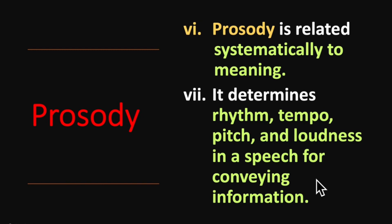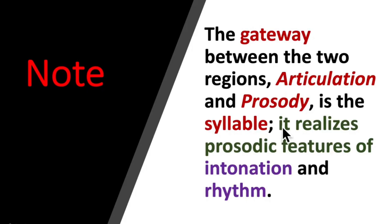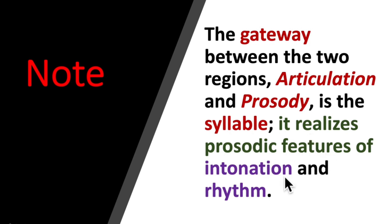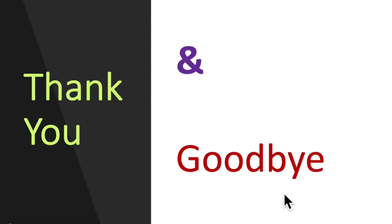The way you pronounce a syllable and the stress you place on a particular syllable does have an effect upon the meaning conveyed to the listener — we cannot ignore it. Prosody determines rhythm, tempo, pitch, and loudness in speech for conveying information. The gateway between the two regions — articulation and prosody — is the syllable, which realizes prosodic features of intonation and rhythm.